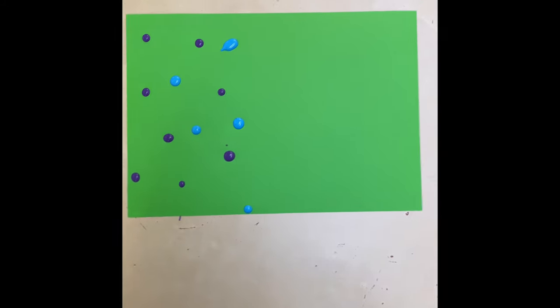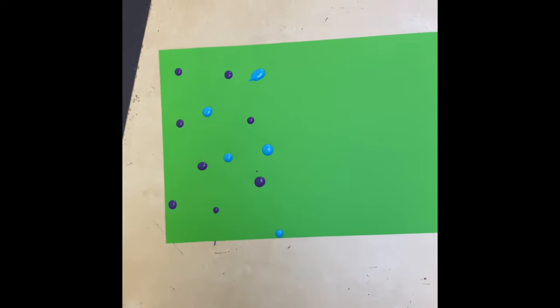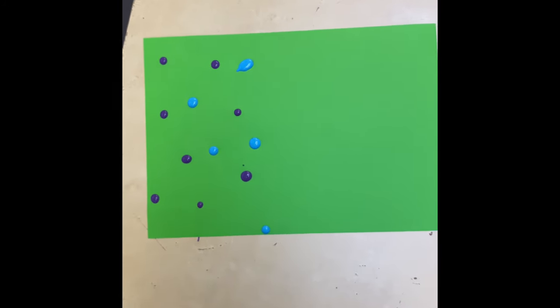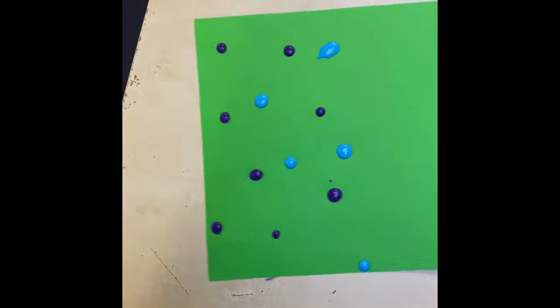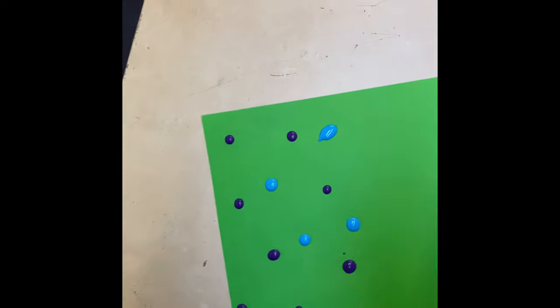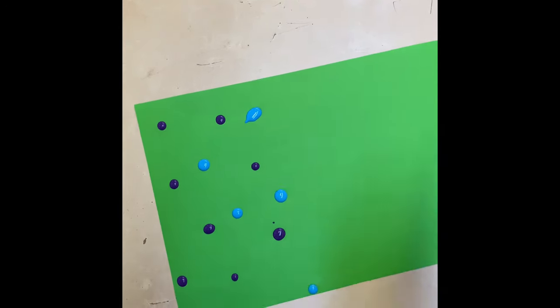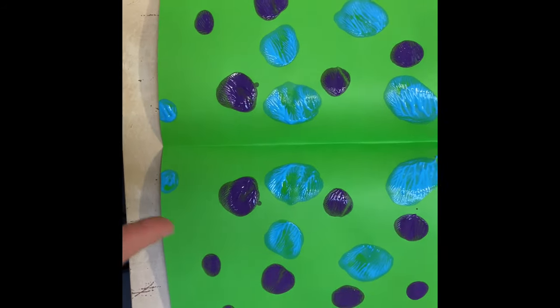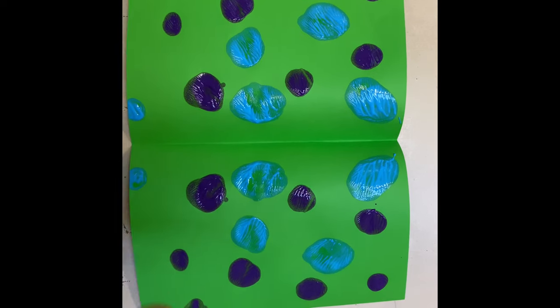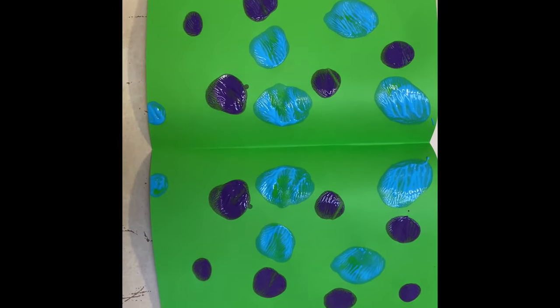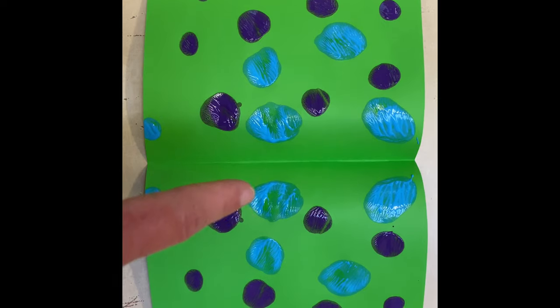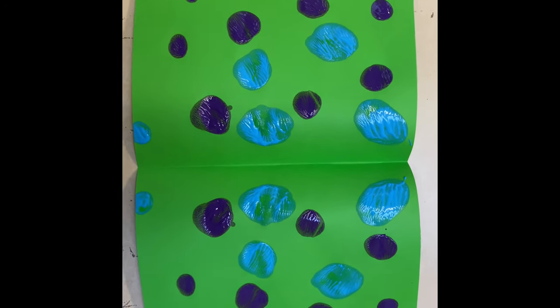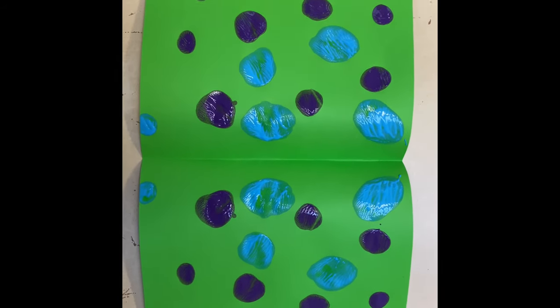A really fun way of finding or creating a symmetrical picture is by painting on one half of your page. Then we're going to take this side, fold it over, squish it down. When we open it up we'll have a symmetrical pattern. Here you can see the line of symmetry and it's the same on both sides. There's big blue, little blue, big blue, little blue, purple, purple, purple, little blue, little blue. How cool is that? Can you make one yourself?